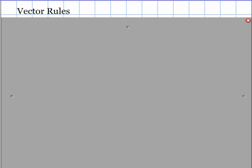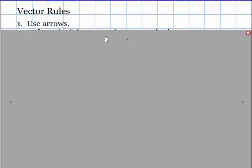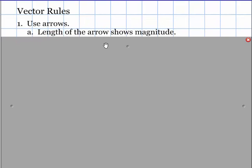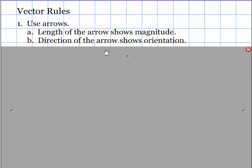First thing that we do is we have our vector rules. Our first one is we use arrows, and the length of the arrow shows magnitude, and the direction of the arrow shows orientation. So magnitude is going to be, let's say if I have an object and let's just draw an arrow this way, let's say it's moving at 18 meters per second. That is the magnitude, and so the length of the arrow is going to show that.